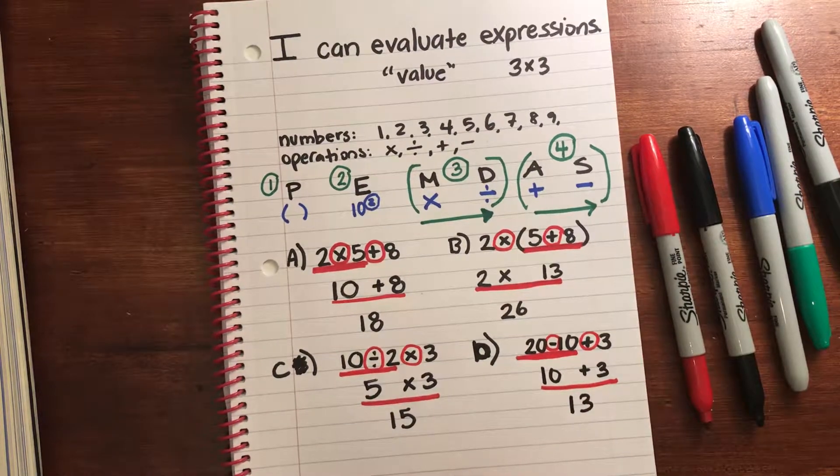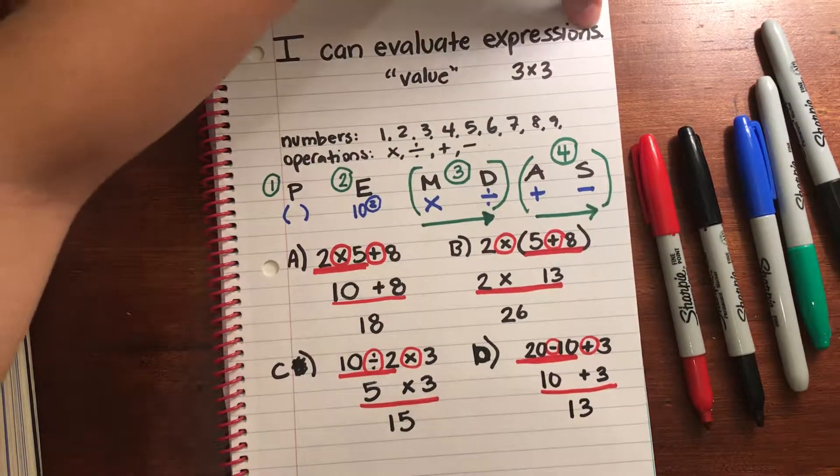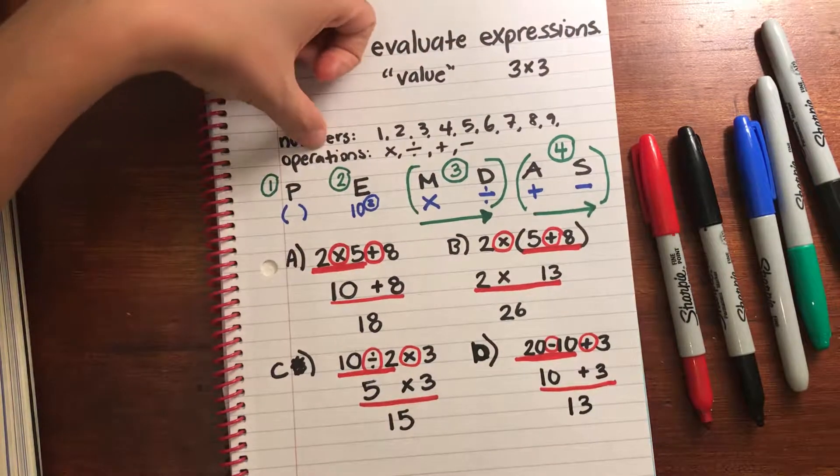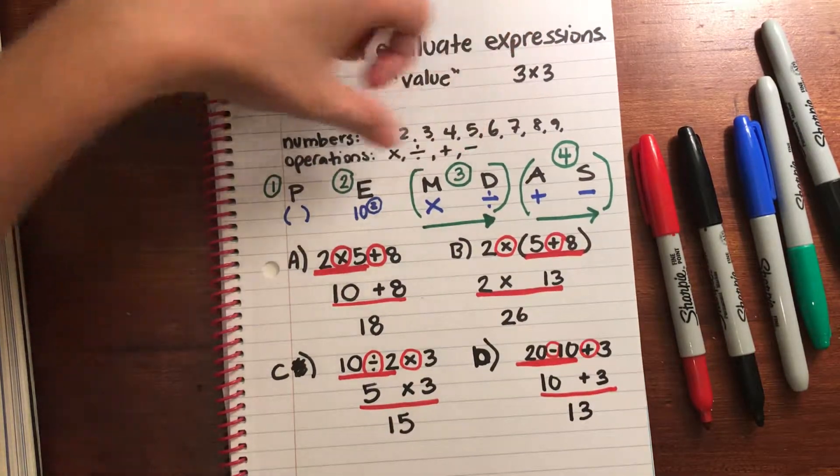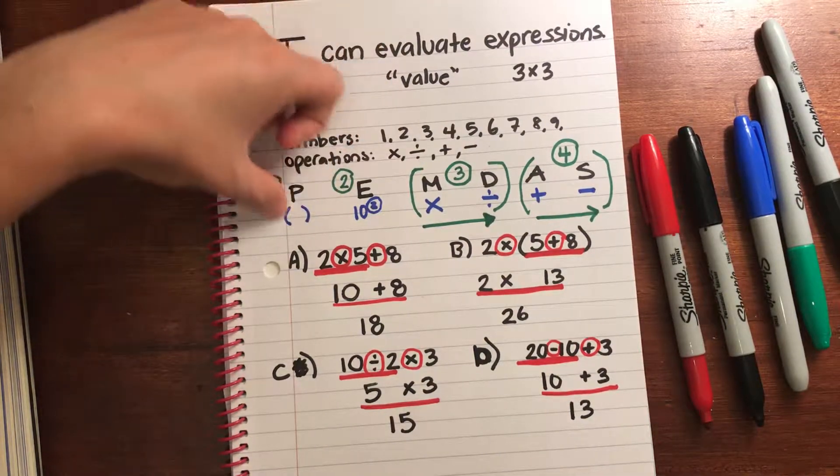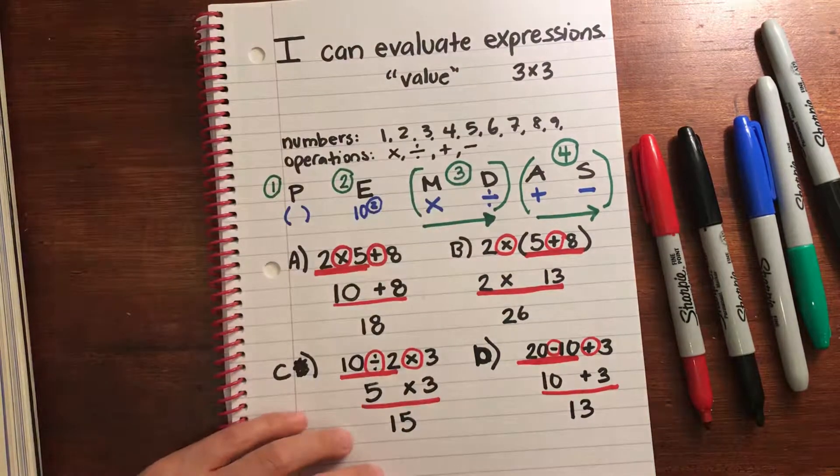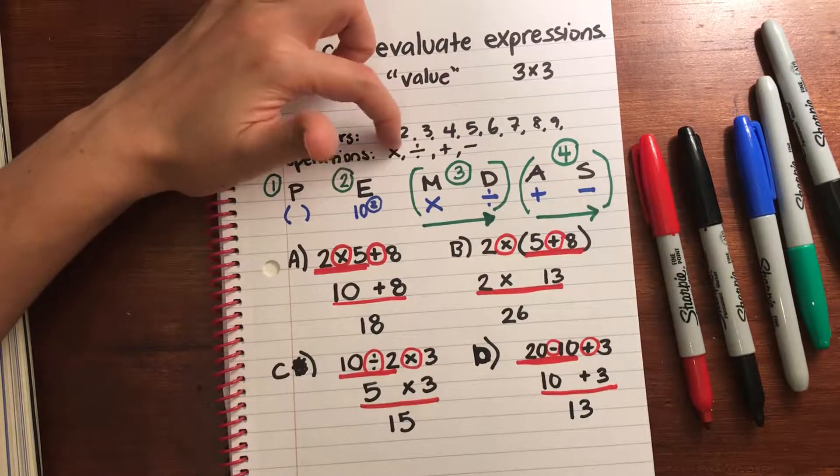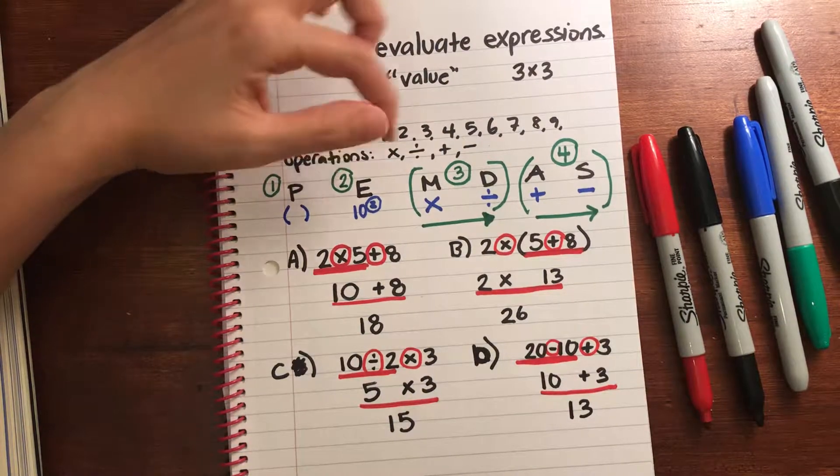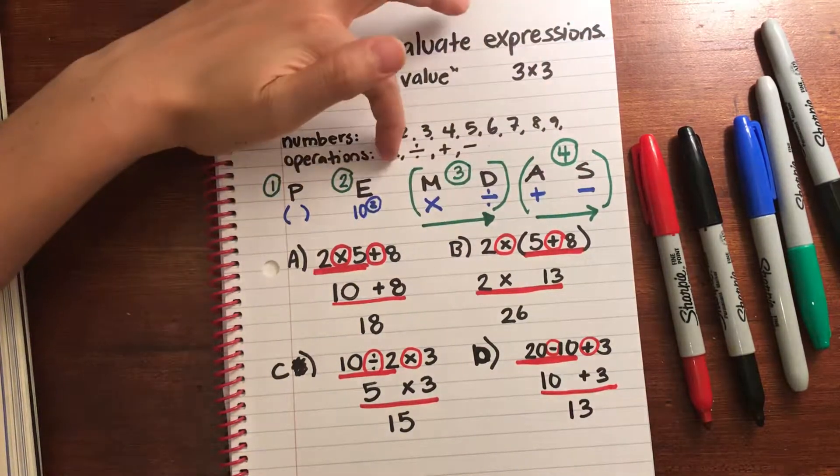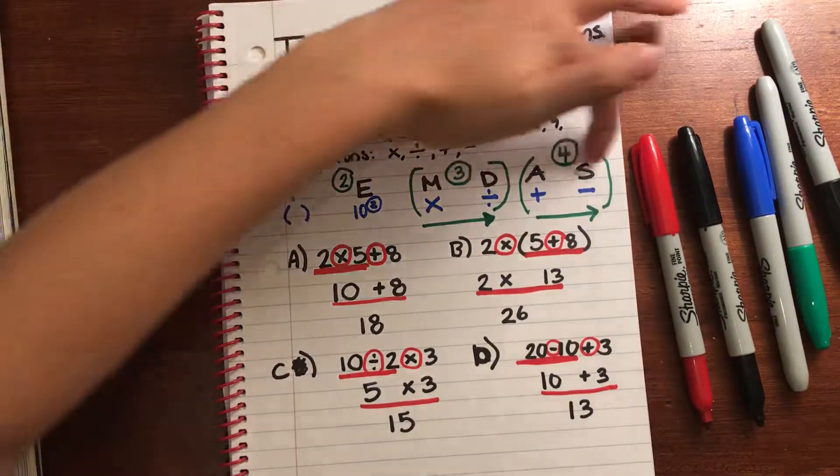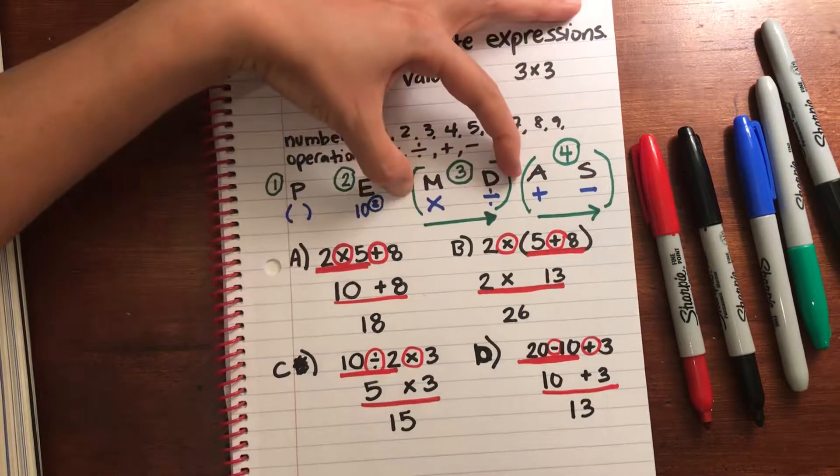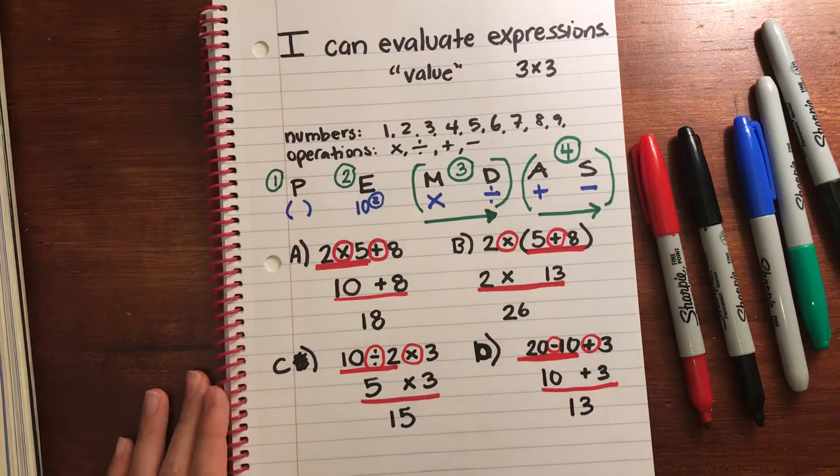So remember with evaluating expressions, evaluate means to find the value. Expressions has numbers, operations, but no equal sign. These are your numbers. Operations for fifth grade: multiplication, division, addition, subtraction. Parentheses are grouping symbols indicating what you have to evaluate first. An exponent is shorthand of multiplication. This is included here, this is just which one you're doing first. And then the four operation symbols: multiplication, division, addition, and subtraction. Remember PEMDAS, please excuse my dear Aunt Sally. Parentheses, exponents, multiplication and division, addition and subtraction. And that's evaluating expressions.